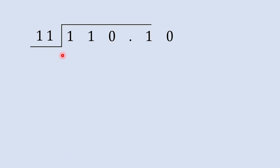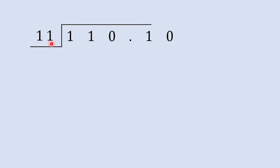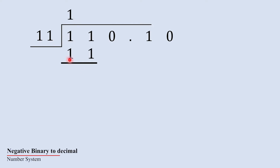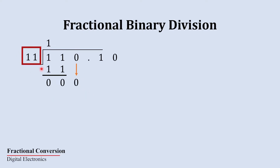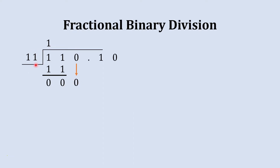We'll start our division with the normal method. Instead of taking only one digit, we'll start with two digits. Let's check: are these two digits equal to or greater than the divisor? Yes, it is equal, so we can divide it by this number.